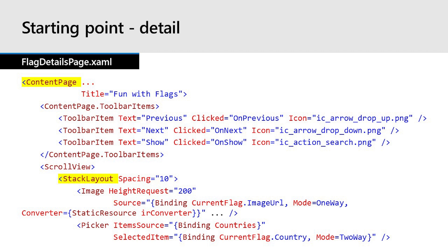This snippet is from the content page and shows the stack layout that contains the flag image and text. Notice how it also defines the toolbar items for navigating between details, which are only useful on single screen devices. Content pages can't be nested inside each other, so to get the list and details side by side I need to refactor the image view, picker and other controls into a content view instead of a content page. I'm going to take everything inside the stack layout and move it to a new file.